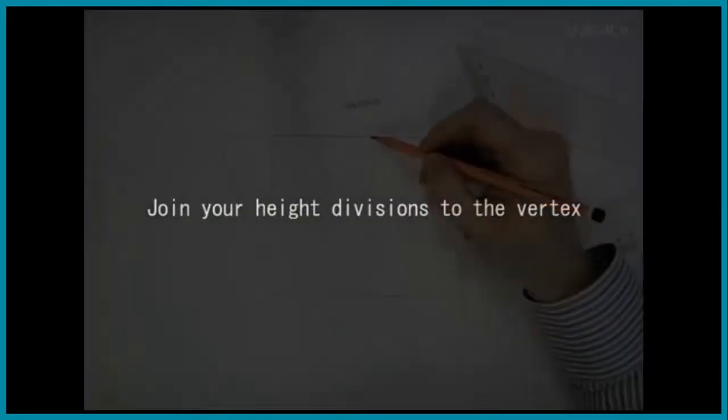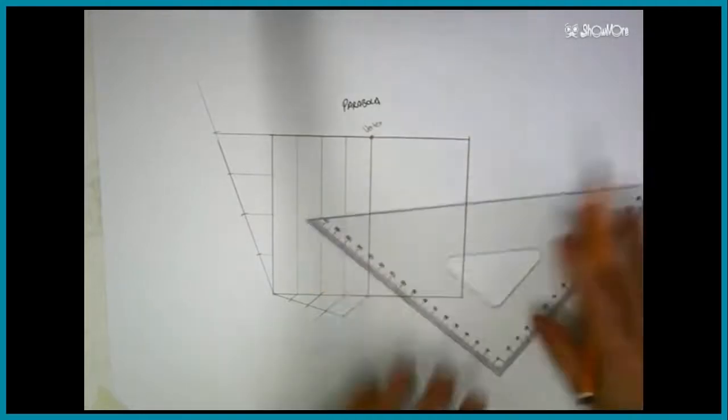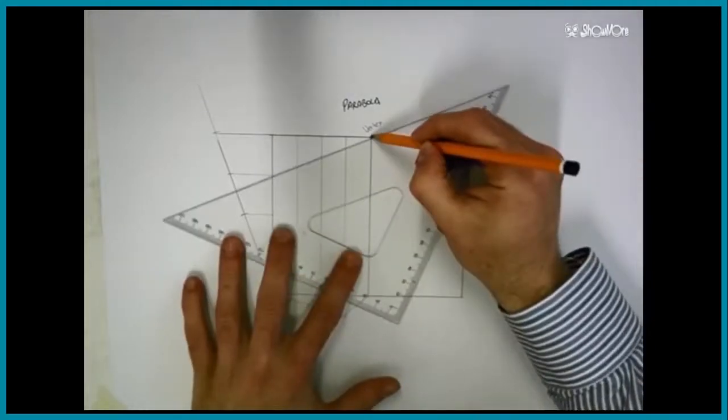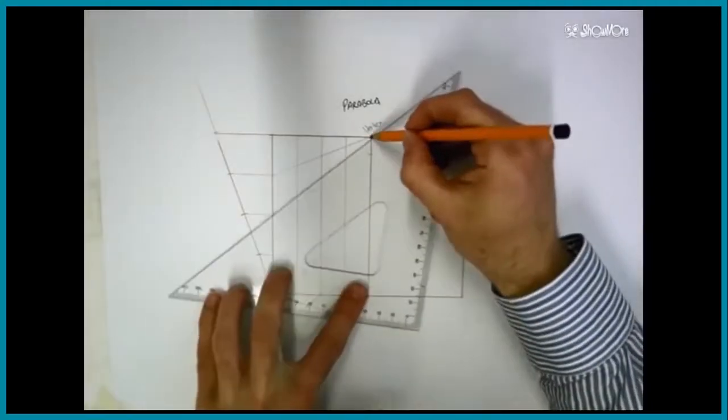We now must take the divisions that we used for the height of the parabola, four in this case, and join them each individually to the vertex.